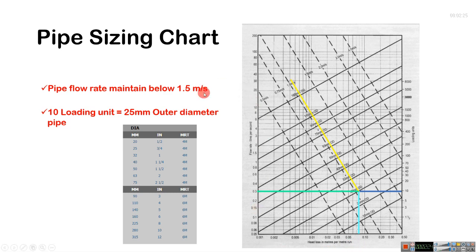Maintain flow rate below 1.5 meters per second. Okay, you get 10 loading units in this example and we come here. There is 25 millimeter outer diameter PVC pipe and flow rate, we go this side, this 1.0. Normally I think 1.2 meters per second, so it's below 1.5. And friction loss 0.08 meter per meter run.